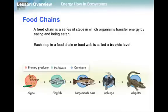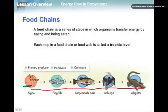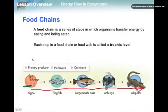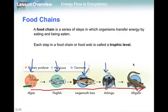A food chain is a series of steps in which organisms transfer energy by being eaten. I'm going to highlight for you in red the pathway of this food chain — it goes from the algae all the way up to the alligator. Each step is a trophic level, highlighted here in blue. These are the five trophic levels in this particular food chain. Food chains can contain more or less trophic levels depending on what food chain you're talking about.